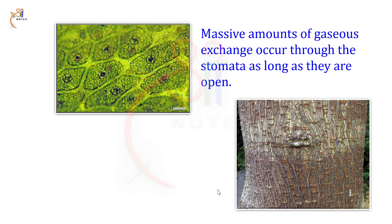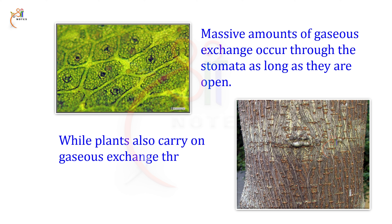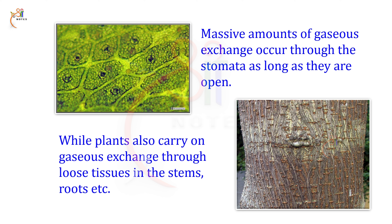Plants also carry out gaseous exchange through loose tissues in the stems and roots. Roots also undergo gaseous exchange. Stems also undergo gaseous exchange. So gaseous exchange does not occur only through the stomata of the leaves, but also through stems and roots.